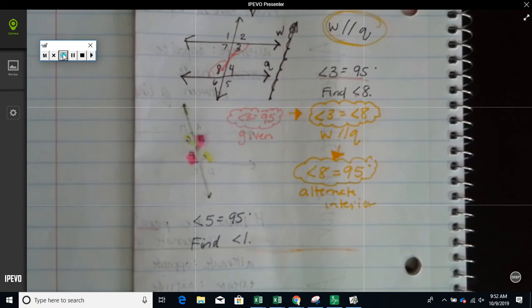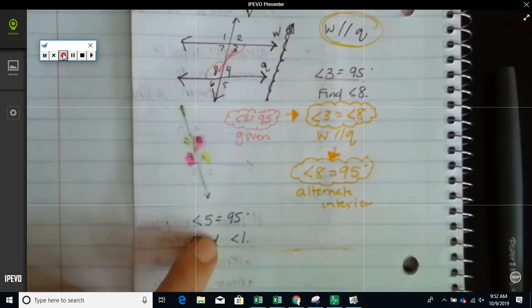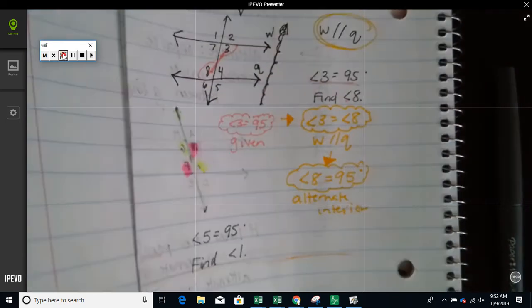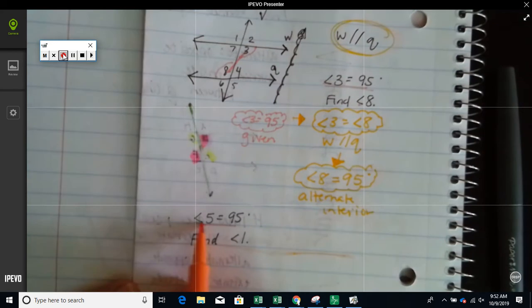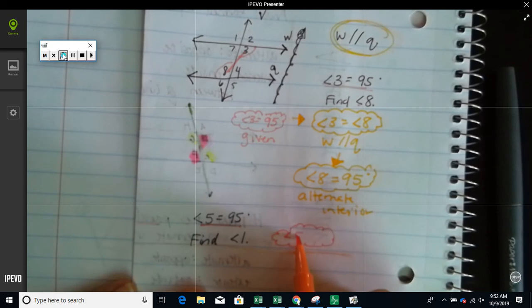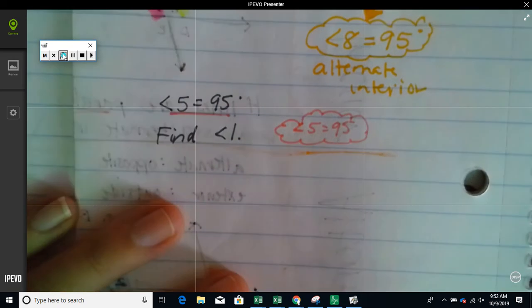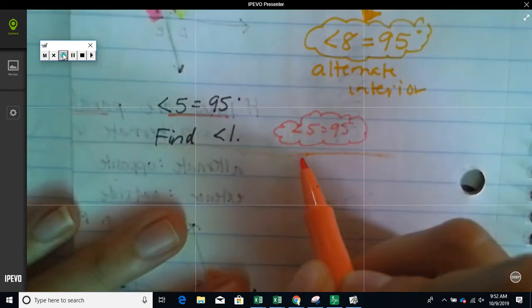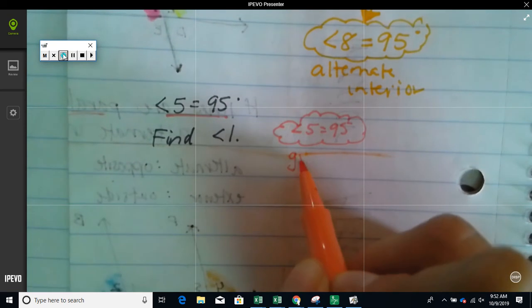Okay, we're going to find the measure of angle 1. Now, they told me angle 5 already. Kishini, can you tell me what we write? Give me just a minute and I'll write it. Where's my orange marker? Here it is. Okay, they already gave me this in the problem, so I'm going to write it right here. Angle 5 equals 95. Kishini, what I was asking was, what do we write under it if it's in the problem? Exactly, you write given.